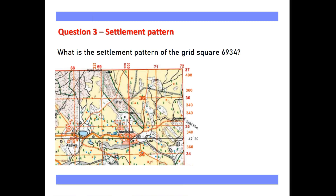Our question is: what is the settlement pattern of the grid square 6934? So 69 is here and 34 is here, and they are intersecting at this point, giving us this grid. We need to find the settlement pattern of village Udhwariya. Over here I can see that the settlements are clustered at one place, so our answer will be compact or nucleated settlement pattern.